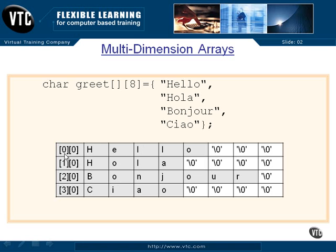Here is greet[0][0], which is this H — the very first byte of our array — and here's our 'hello', just like before. But three bytes are padded out with nulls because this has to be relatively square. We can't have odd-length values, because then we couldn't calculate our way through it using the subscripts times the length, which is 8. So we take 1 times 8 plus 0 and add that to the base pointer, and that gets us to the first character of 'hola': sub 1, sub 0 — H-O-L-A — padded out with nulls. Then 2 times 8, which is 16, plus 0 gets us to 'bonjour' with one null. That's our longest value.